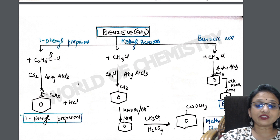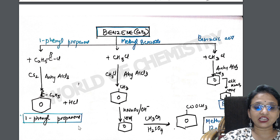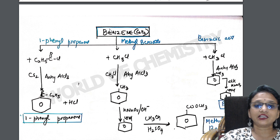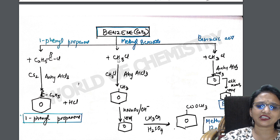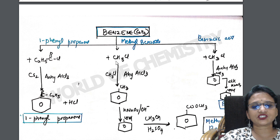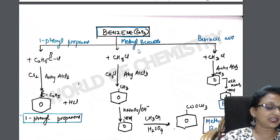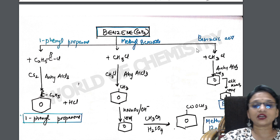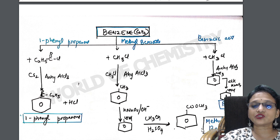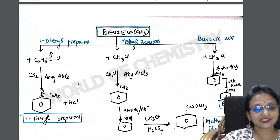Starting with benzene: to convert to one phenylpropanone, methyl benzoate, or benzoic acid — the procedure starts with Friedel-Crafts reaction. For phenylpropanone, do Friedel-Crafts acylation. For methyl benzoate, do alkylation — once you reach toluene, do further oxidation to get methyl benzoate. For benzoic acid, also do alkylation — after reaching toluene, further oxidation gives benzoic acid. All three are on one page.